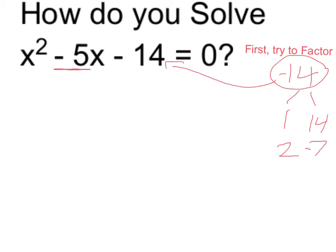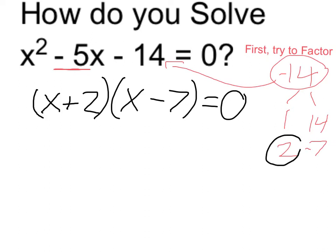Which means we can factor and rewrite this trinomial as follows. By using these factors in binomials, we get x plus 2 times x minus 7 equals 0. If we were to foil that back out, we would get what we originally had, so those are equivalent.